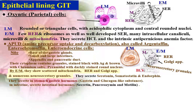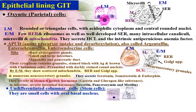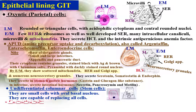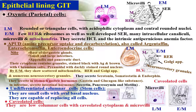Other cells present are regenerative or stem cells. They are small cells with oval basal nuclei, capable of replacing all cells in the glands of the stomach or in the intestine. The intestine also contains caveolated cells, which are low-columnar cells with caveolated cytoplasm of unknown functions.